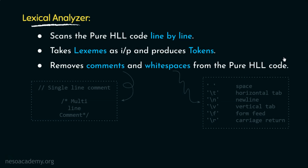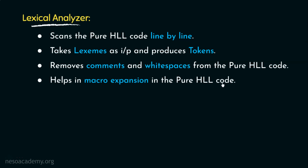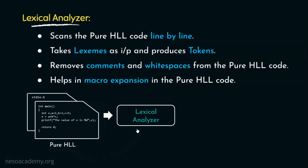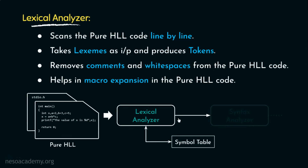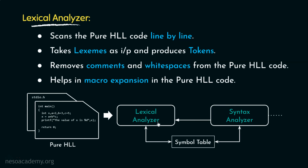The lexical analyzer also helps with macro expansion, allocating the value specified by the #define preprocessor directive to all instances where the macro is used. After processing the source code, the lexical analyzer creates entries for identifiers in the symbol table and passes tokens to the syntax analyzer. This doesn't happen all at once — after one token is passed, the syntax analyzer performs parsing and asks for the next token, so the lexical analyzer and syntax analyzer frequently communicate with one another.